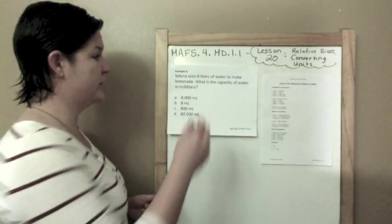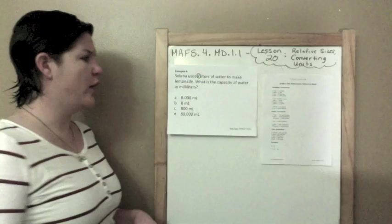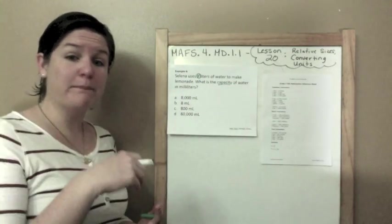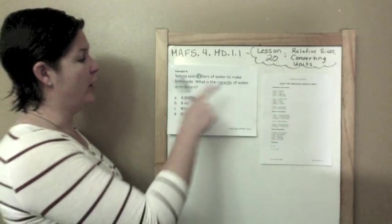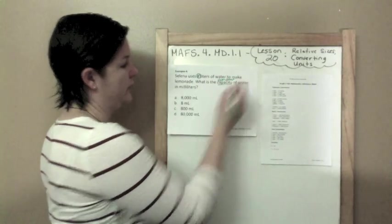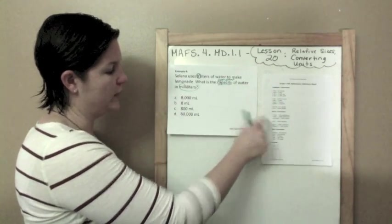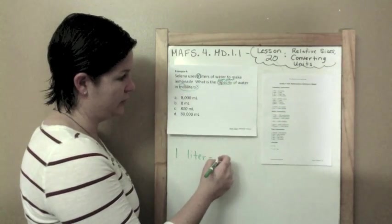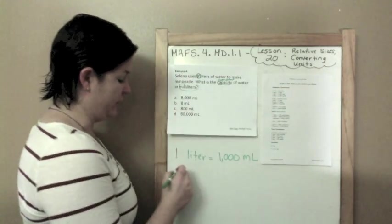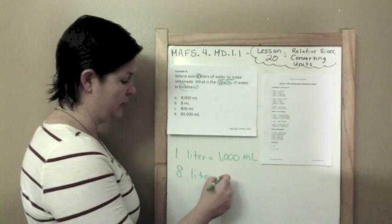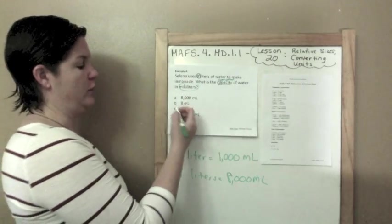Selina uses 8 liters of water to make lemonade. That sounds good right now, some lemonade. What is the capacity of water in milliliters? Let's talk about this word capacity. That's the amount of liquid or substance that a container could hold. So I'm converting liters to milliliters. Let's use our reference sheet. So 1 liter equals 1,000 ml for milliliters. We have 8 liters. So since we're multiplying by 8 here, we need to multiply by 8 here. That would be 8,000 milliliters, which is A.